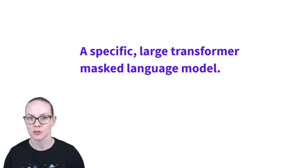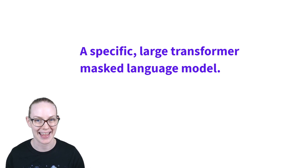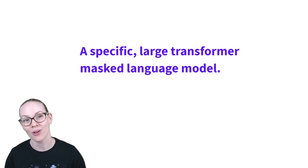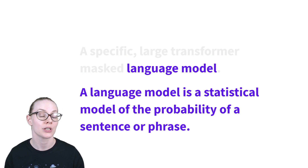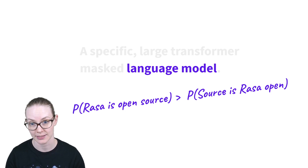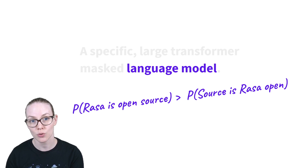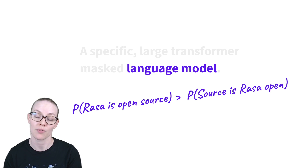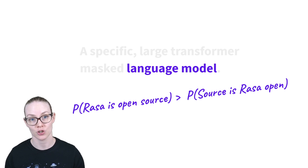BERT is a specific large transformer masked language model, and I'm going to talk about what all of those words mean. First off, a language model. Traditionally, language models are statistical models of the probability of words or phrases. So a language model could tell you that the probability of the phrase 'RASA is open source' is greater than the probability of the phrase 'source is RASA open' given some training corpus.